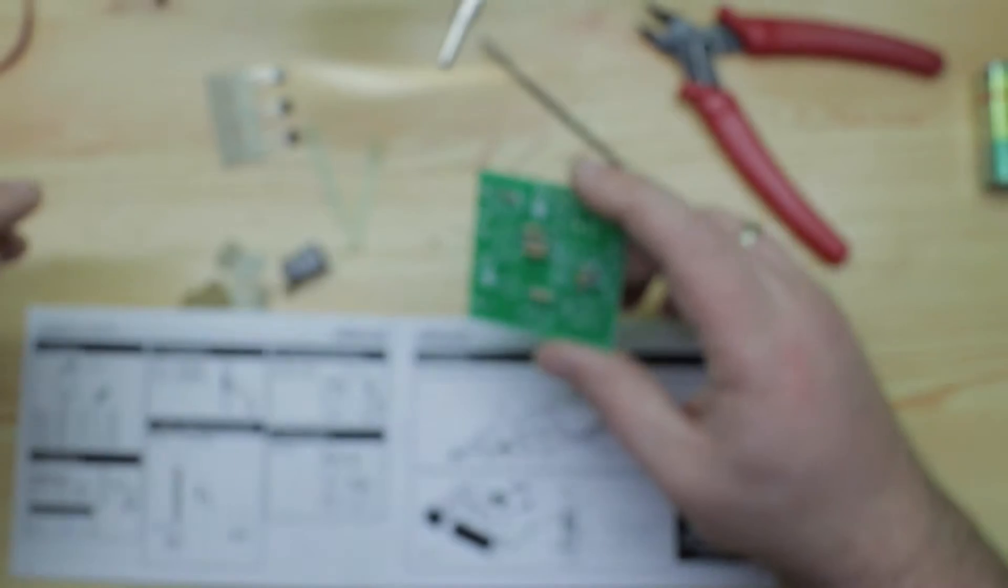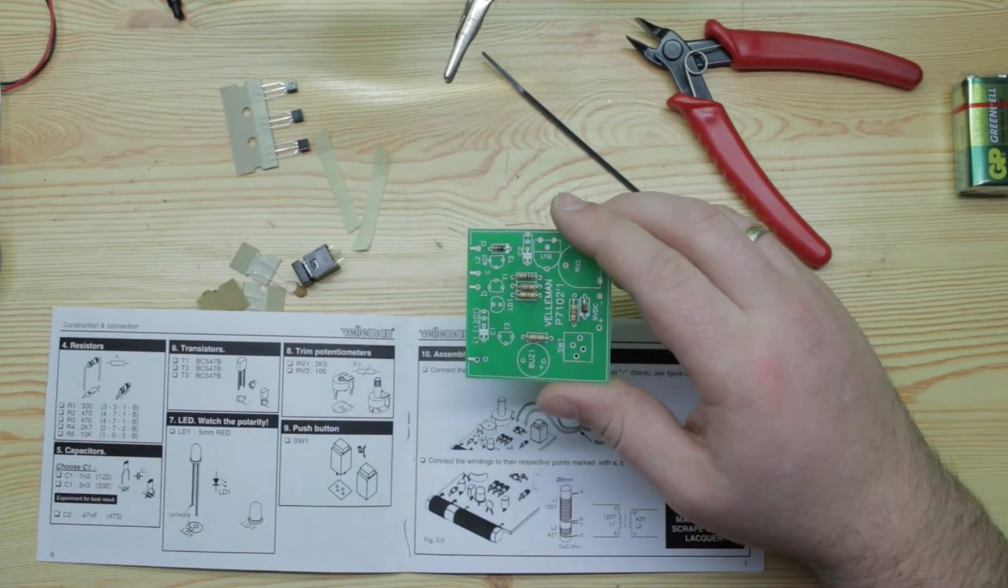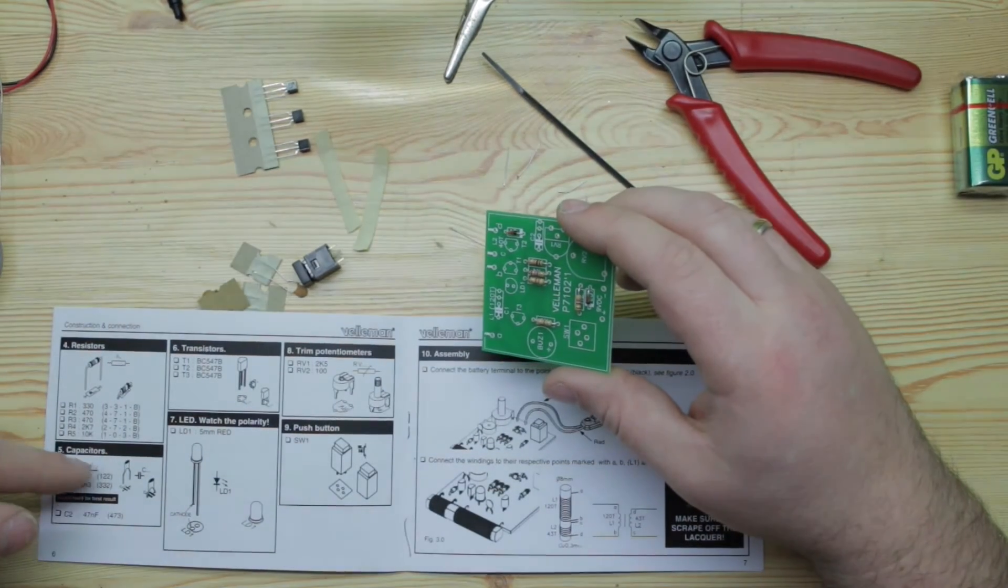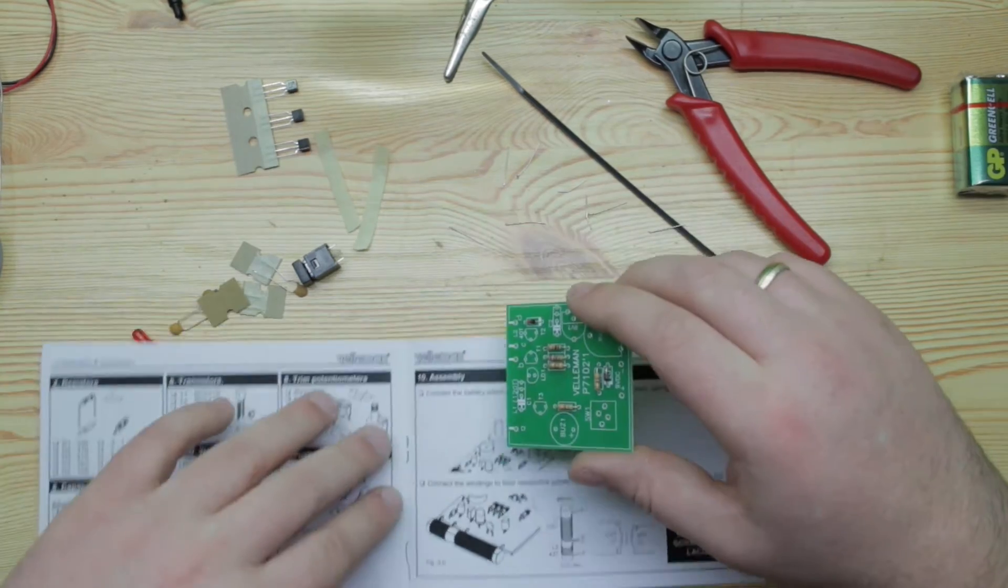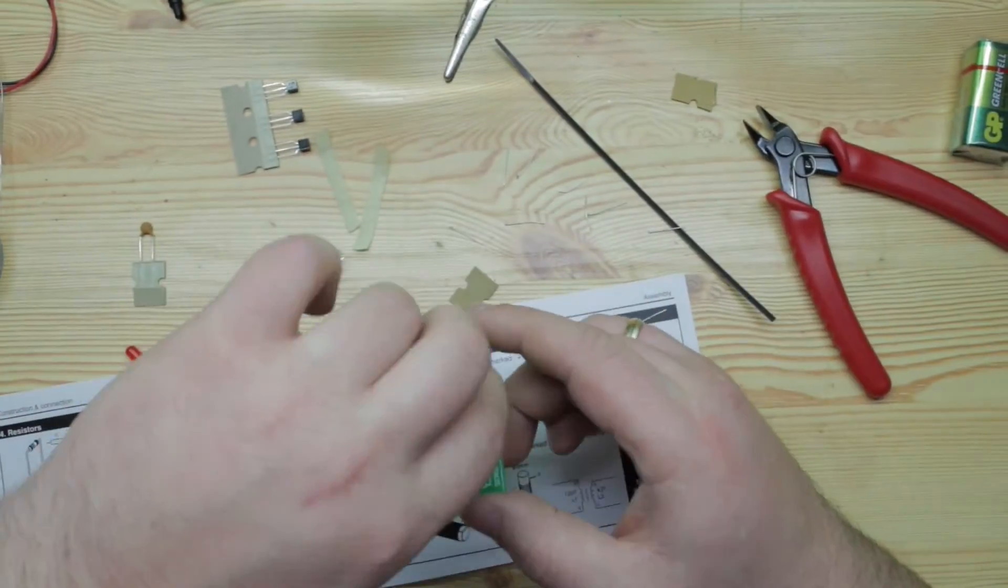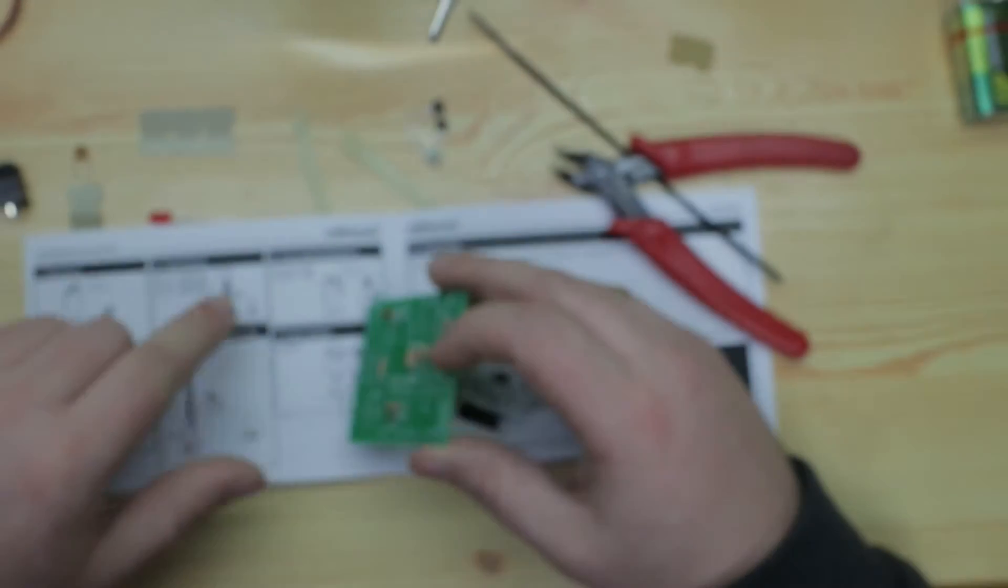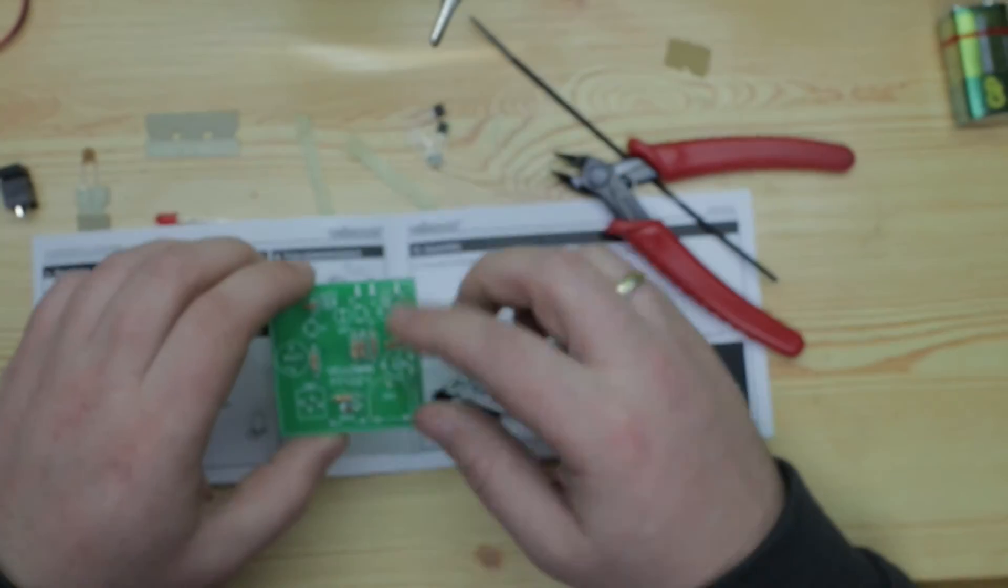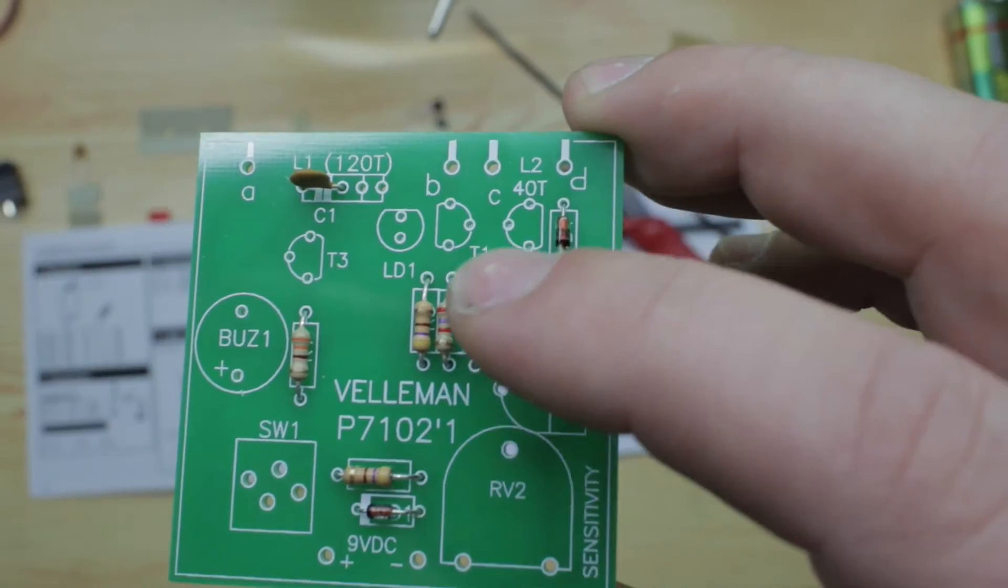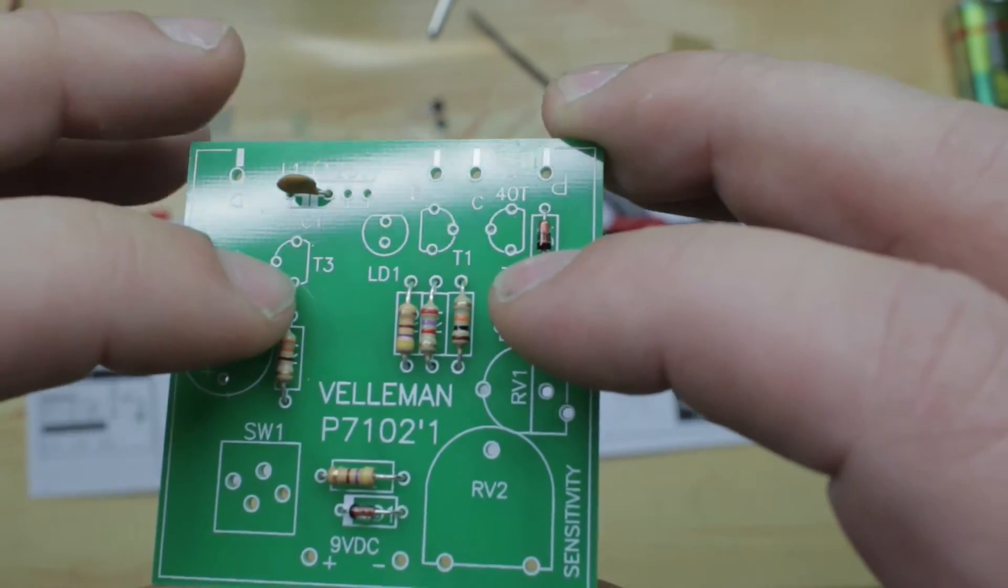After installing resistors we can go with the capacitors. C1 - it's either 122 or 332. Right now we have to put in the transistors. You have three transistors but all of them are the same. We just need to put them in their corresponding places. Two transistors right here and another one right there.